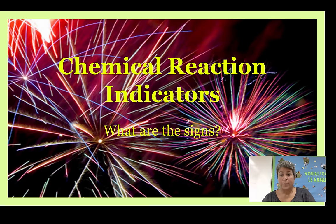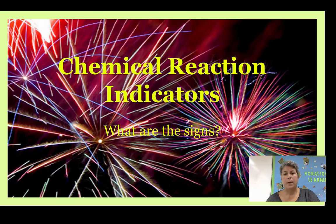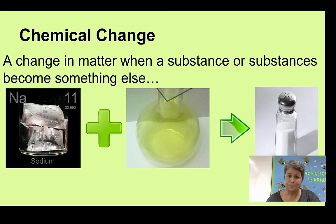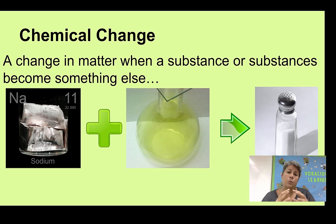Chemical change, chemical reaction, can sometimes be hard to determine that an actual chemical change has taken place. But there are some observable indicators that will help you to know when a chemical change or a chemical reaction has taken place. So let's talk about what a chemical change is. The very basic definition would be when there's a change in matter — when a substance or substances become something else. It's not magic; there's really something happening. There's a rearranging of the molecules within the substance.